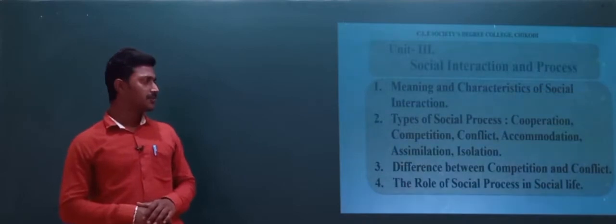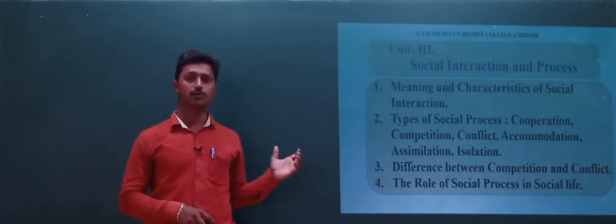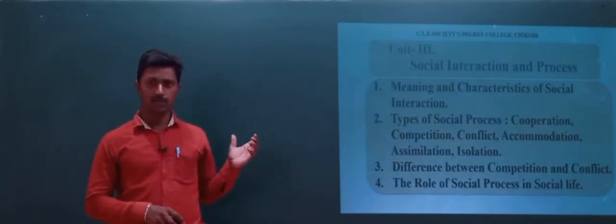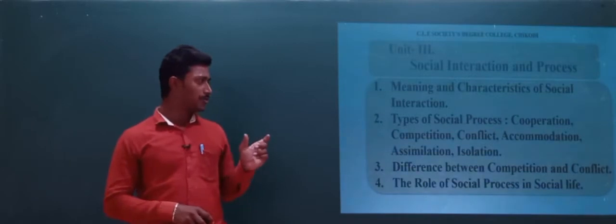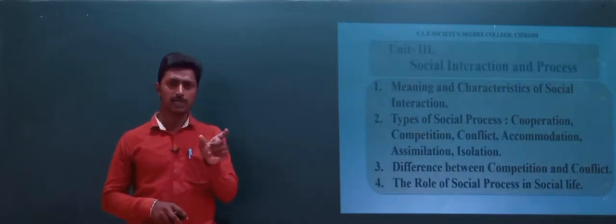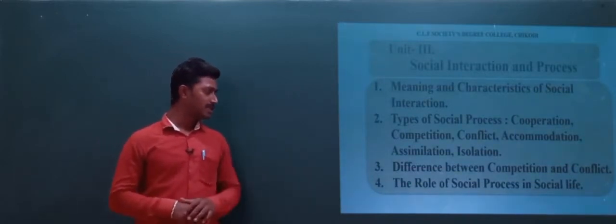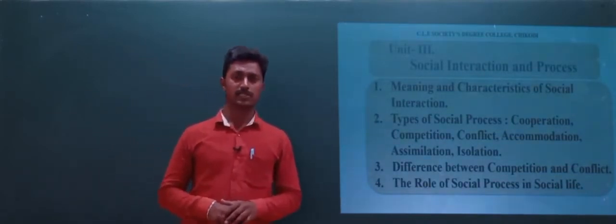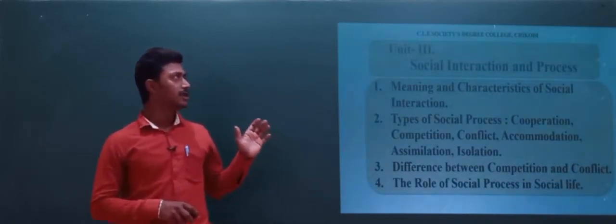Number three is the difference between competition and conflict. Students always get confused regarding these two types of social process, so we need to study the differences clearly. The fourth topic is the role of social process in social life. This is about Unit Number Three.